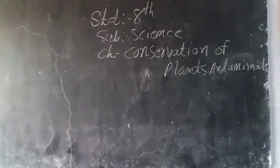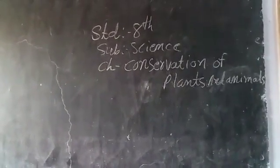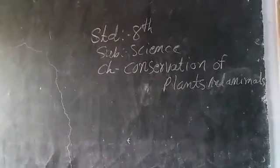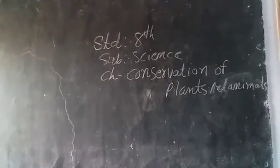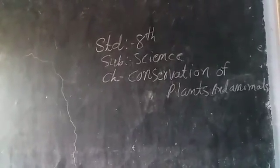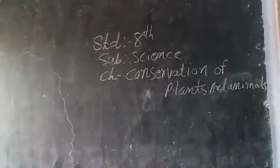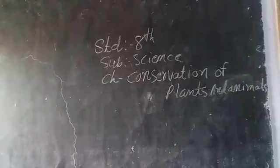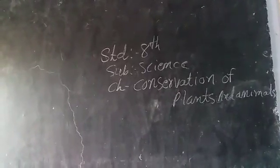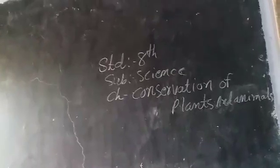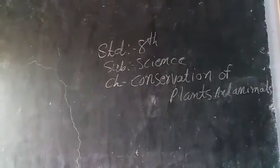Scientific reason 3: Recycling of paper should be done. To make 1 ton of paper, 17 full-grown trees are cut. By saving paper we can reduce the number of trees being cut. Paper can be recycled 5 to 7 times for use. So by using and recycling paper, we can save trees; therefore recycling of paper should be done.